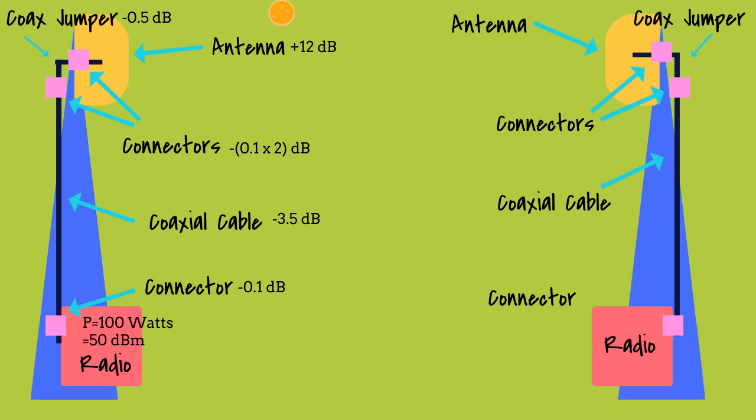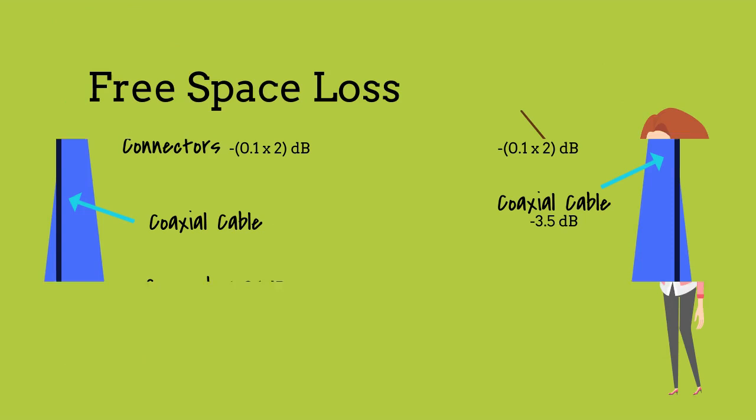We then have a gain as we go through the antenna, a loss as we go over the air, which we'll show how that's calculated in the next slide. We get to another receiver gain at the receiving antenna, a loss as we go through the connectors and the jumper of the receiving tower, a loss as the coaxial cable going down the tower of the receiving radio, and another connector loss and finally into the radio.